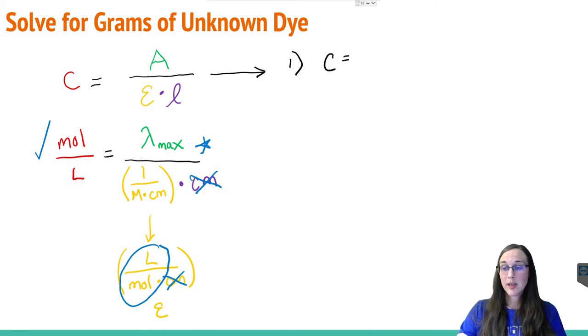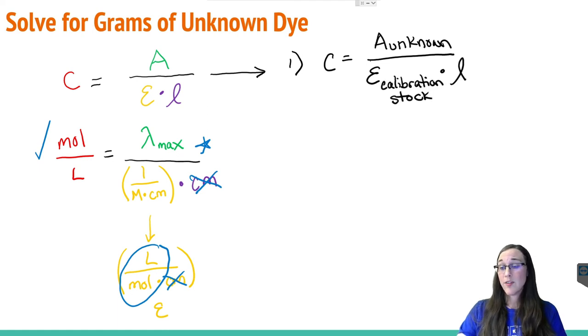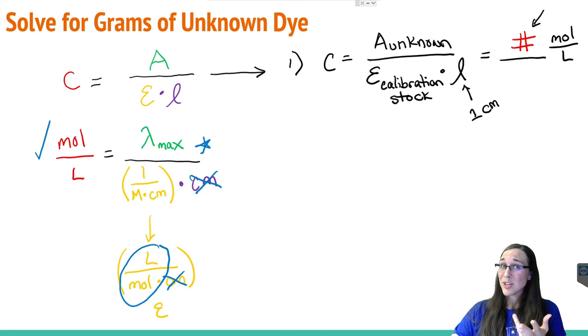The first step would be to plug in the values you obtain from lab into our rearranged equation. So you'll have concentration being equal to the absorption of your unknown sample divided by the extinction coefficient or molar absorptivity of your calibration stock times L or the length of the cuvette, which again we were assuming was one centimeter in the case of most labs. And this would give you a certain value in moles per liter that you will take on to the next step.